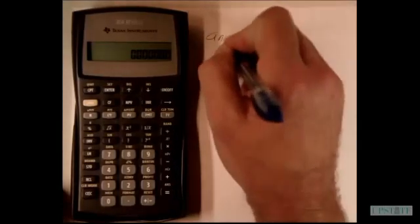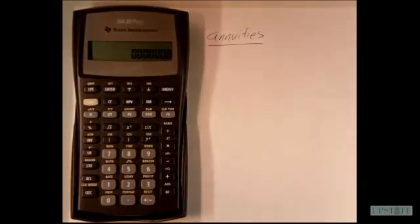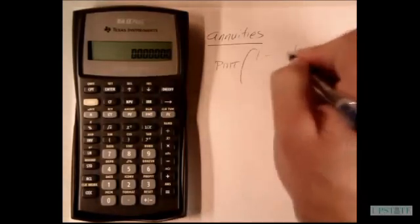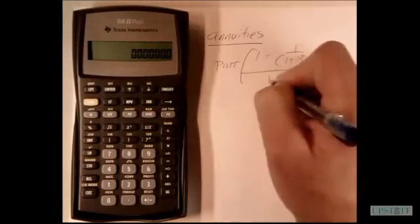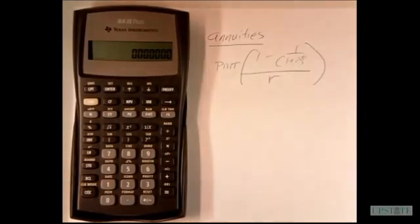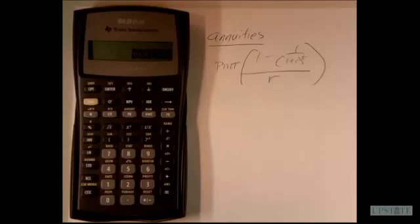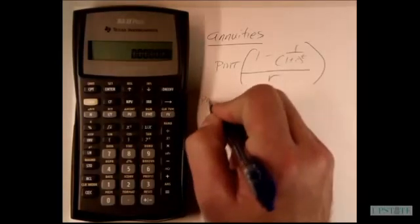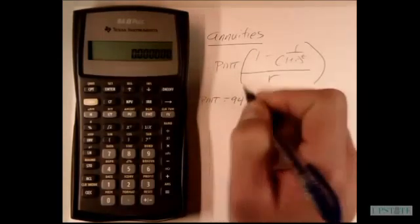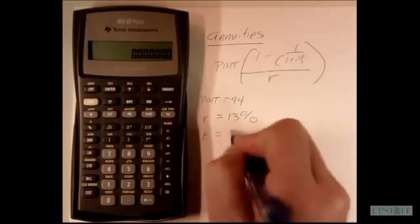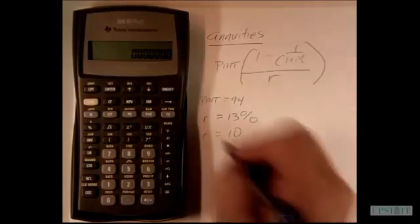Alright, now working with annuities. We're trying to figure out exactly how much that is worth. We take this basic equation here. Let's say we have a case where we have payments in the amount of $94, an interest rate of 13%, and 10 payments. We're trying to figure out what our present value is.